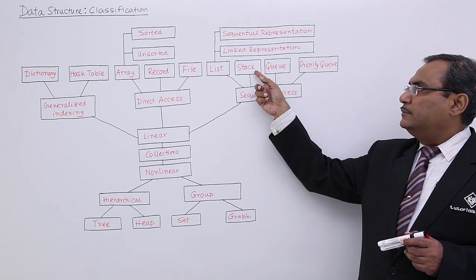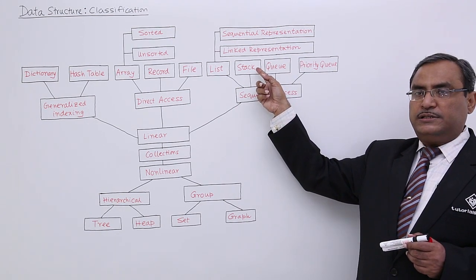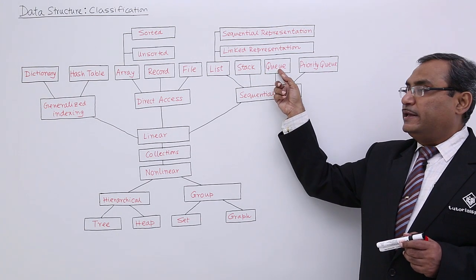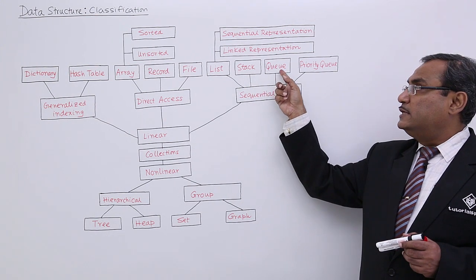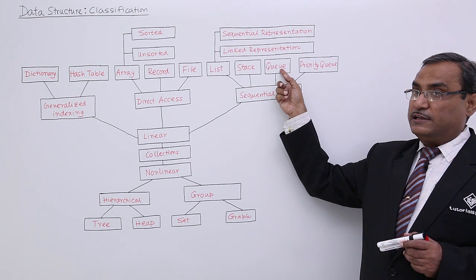We have stack, which is first in, last out. And we have queue, which is a first in, first out data structure.